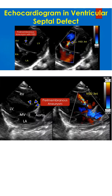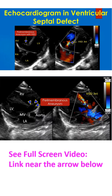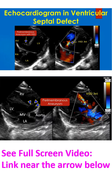Echocardiogram in a tilted apical 4-chamber view showing all 4 cardiac chambers: RA – right atrium, RV – right ventricle, LA – left atrium, LV – left ventricle. The perimembranous ventricular septal aneurysm with defect is marked by an arrow in the left panel.